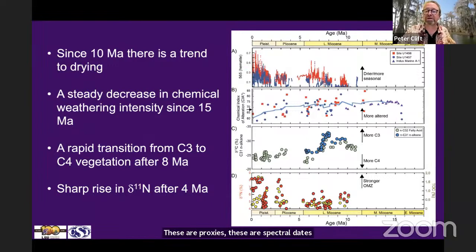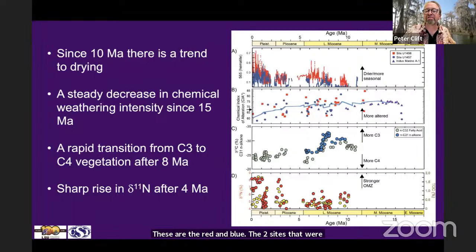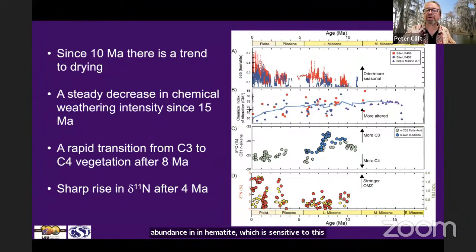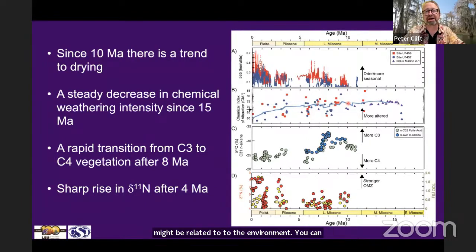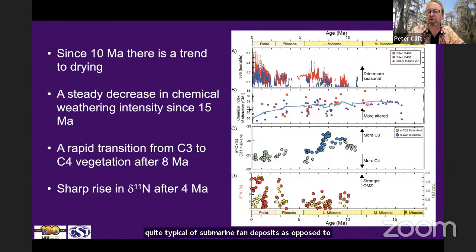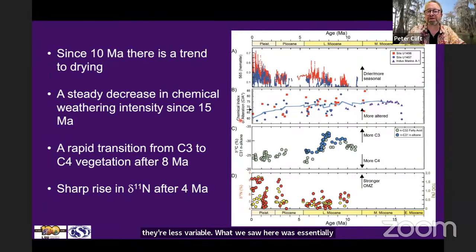So what do we see in Expedition 355? What we did see was increasing evidence for drying of the environment, or at least the development of a dry season. These are spectral data - the red and blue are the two sites that were drilled. What you can see is essentially increasing abundance in hematite, which is sensitive to this particular wavelength, starting around 10 million years ago, maybe peaking and then quite variable but high levels of hematite, particularly in the Pleistocene. The record of chemical weathering is very scattered, which seems typical of submarine fan deposits as opposed to hemipelagic ones. What we saw was essentially a long-term decrease in chemical weathering - less chemically altered material in the fan since the mid-Miocene.